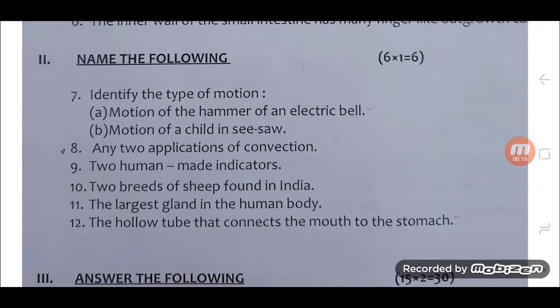8. Any two applications of convection? 9. Two human-made indicators. 10. Two breeds of sheep found in India. 11. The largest gland in the human body. 12. The hollow tube that connects the mouth to the stomach.